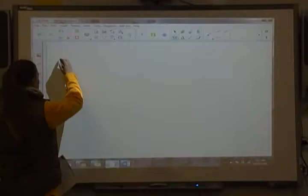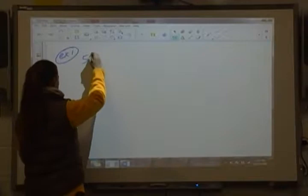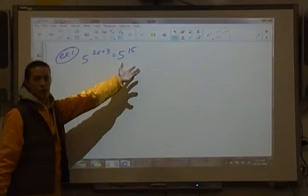Now we're going to take a look at some exponential one-to-one property examples. So let's take a look at something like 5 to the 2x plus 3 is equal to 5 to the 15.